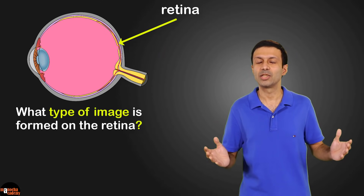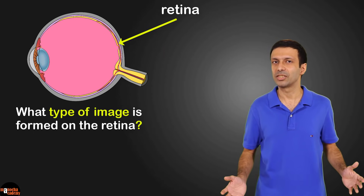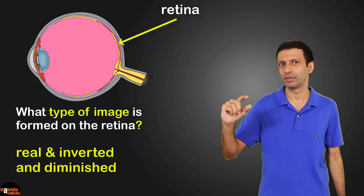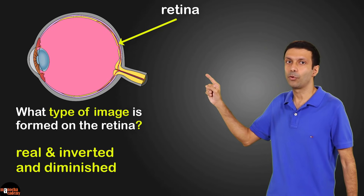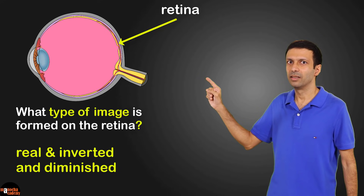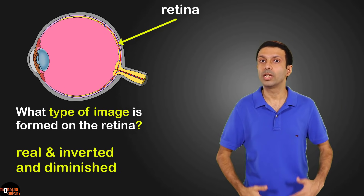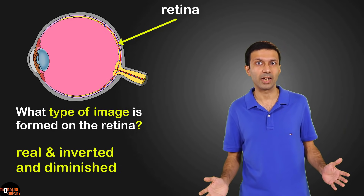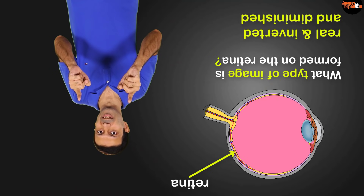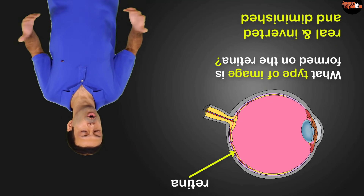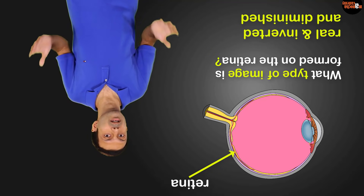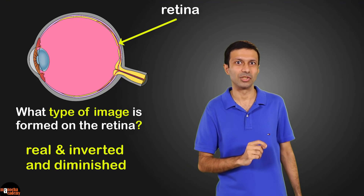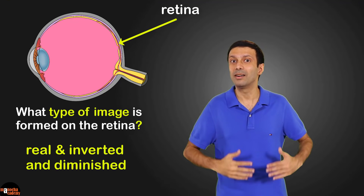The image formed on the retina is a real, inverted, and diminished image. It's a real image since it's formed on the screen of the eye — the retina. Real images are inverted, so the video you're watching right now is actually inverted on your retina. Then why doesn't the world appear inverted? Thankfully, the brain perceives it as an upright image — otherwise the world would appear upside down.